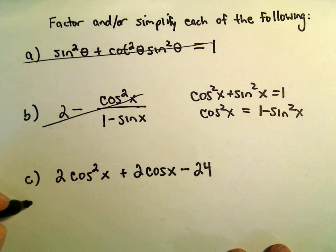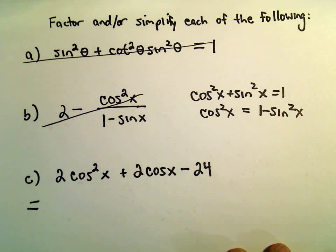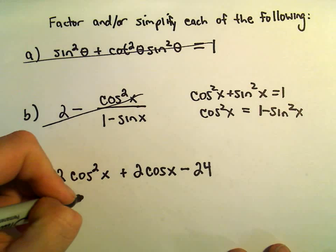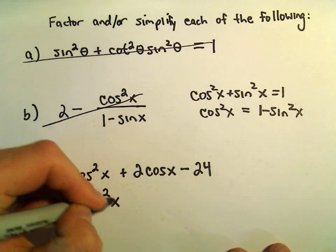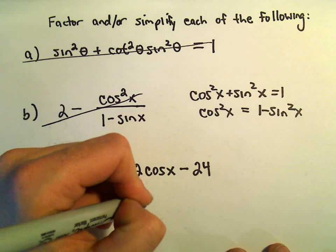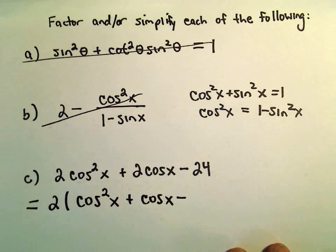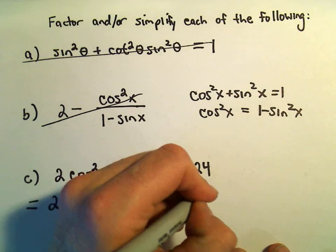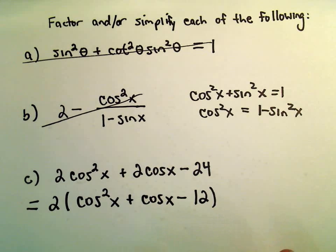The first thing I always do in factoring is look for the greatest common factor. Well, 2 will go into all of those, so we can factor the 2 out. Then we would have cos²x + cosx - 12, since 2 times negative 12 gives us negative 24 back.